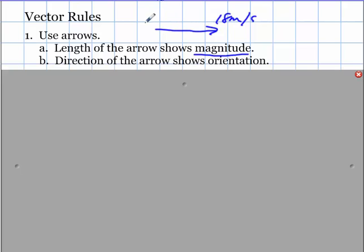If I have another arrow that is this long, let's say that one is not as long as this one, so this vector may only be 8 meters per second. And so the length of the arrow shows magnitude. The direction of the arrow shows orientation, and the orientation is the direction that the arrow is pointed.